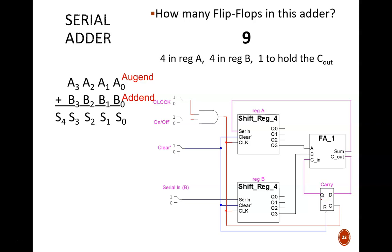But wait a second. How do the augend and addend values enter the registers in the first place? We see four input switches on the left, but three of those are for control.